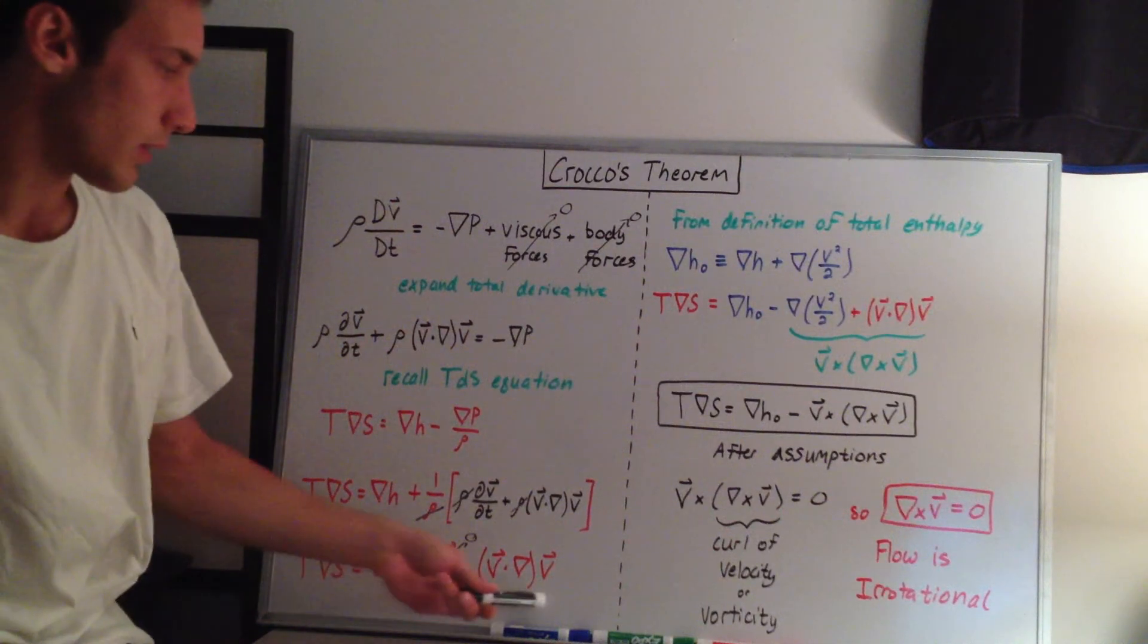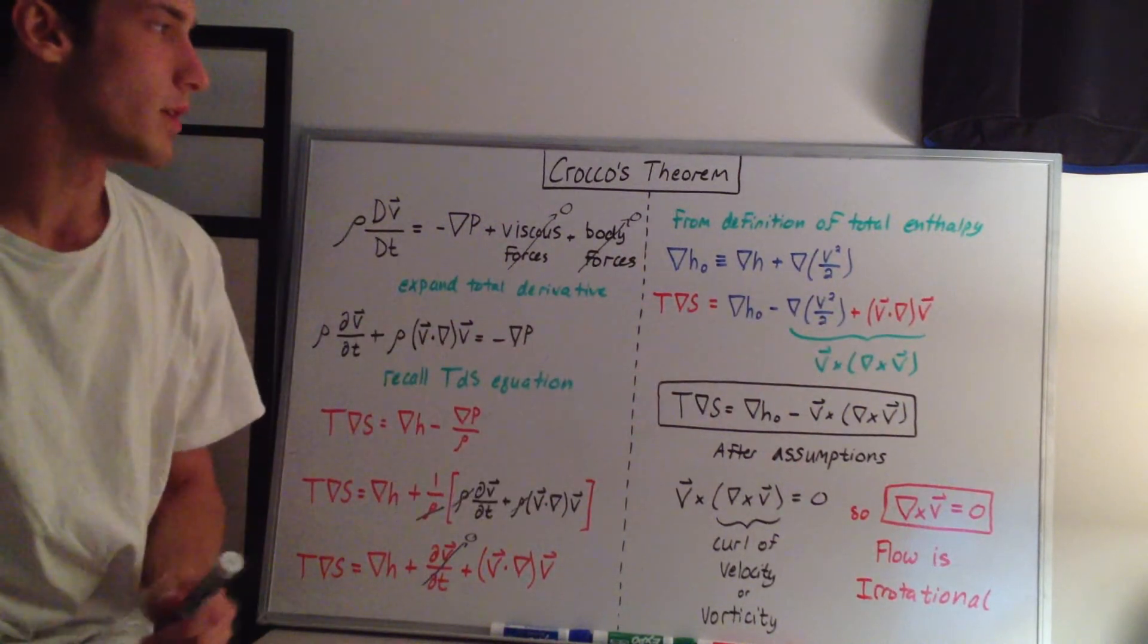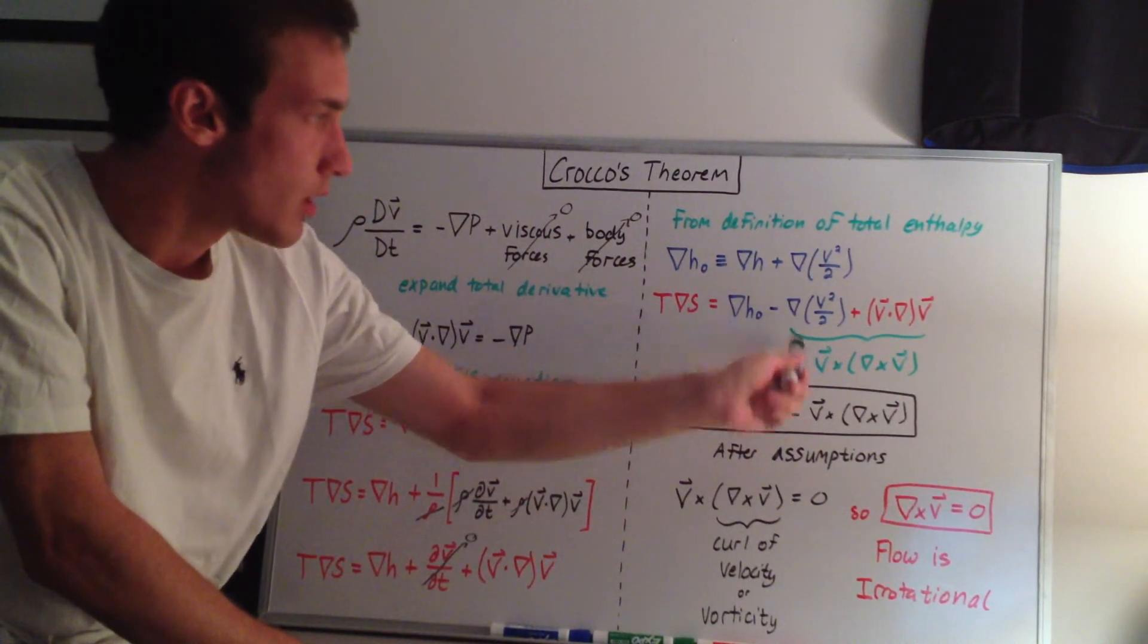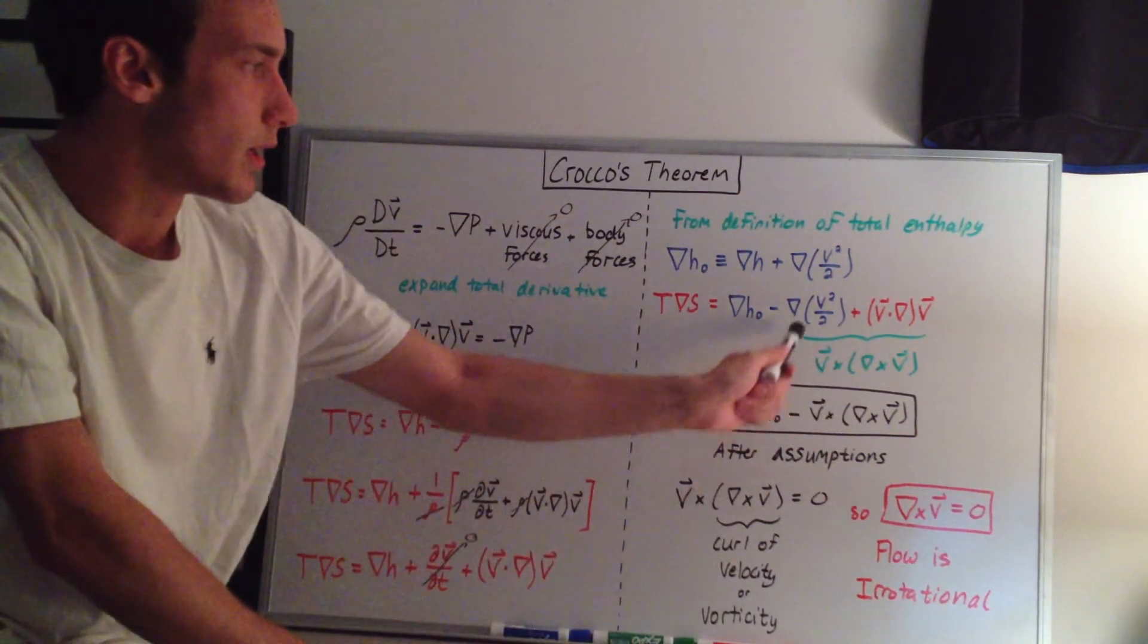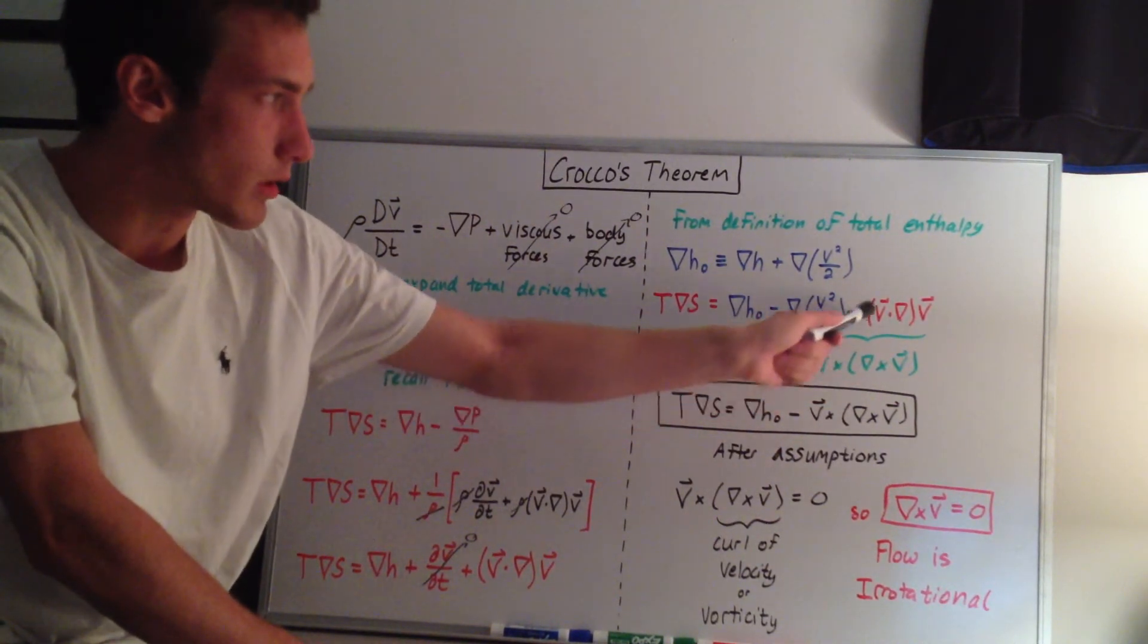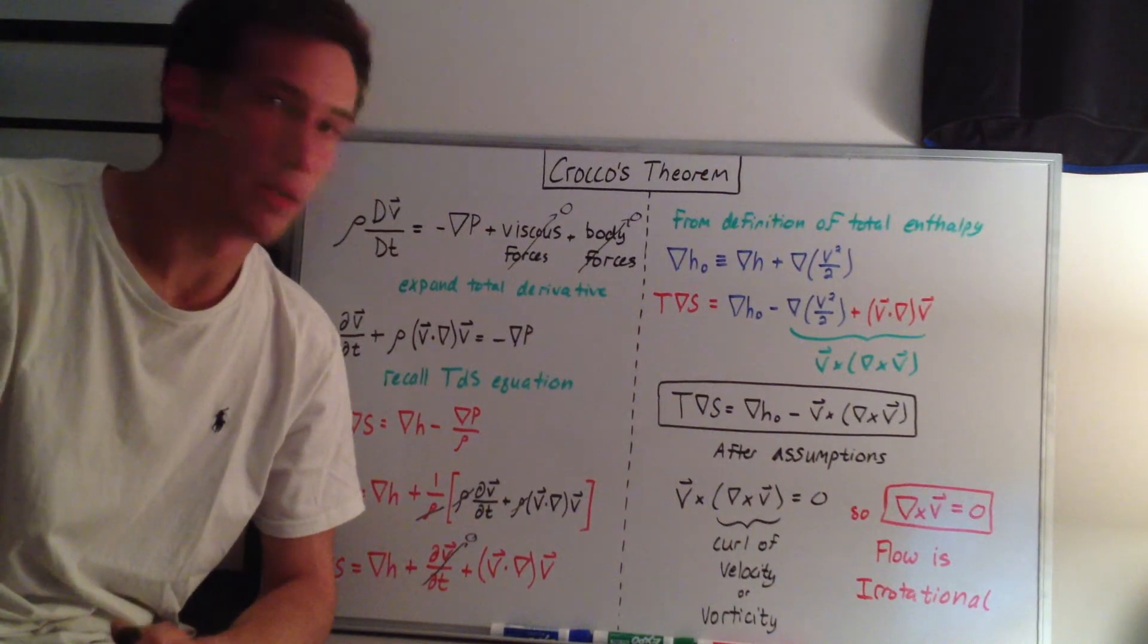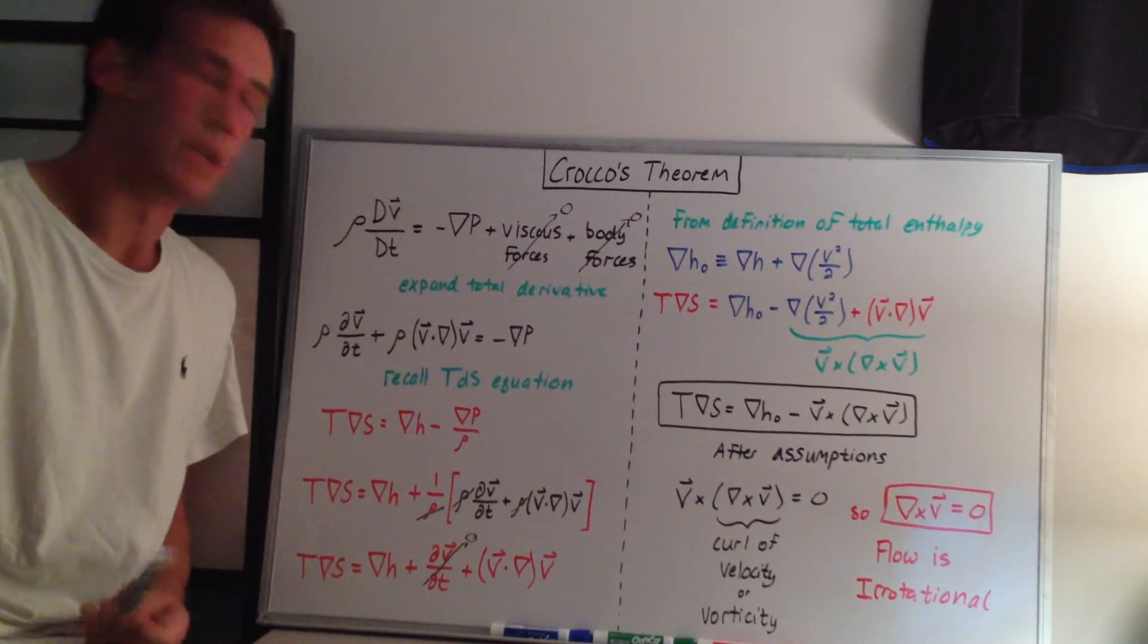Then we still have this term that was left over from the substantial derivative in red here. If you look at my vector identity proof video, which I'll also post in the description, we can substitute this expression, v cross del cross v, in for this expression here. Not the minus sign, just the d(v squared over 2) plus v dot del v. When we do that, we end up with Krakos Theorem, and this is for steady flow. Like I said before, a combination of the energy and momentum equations.